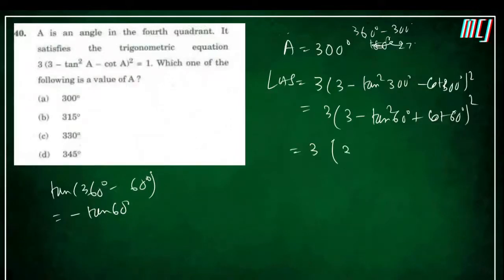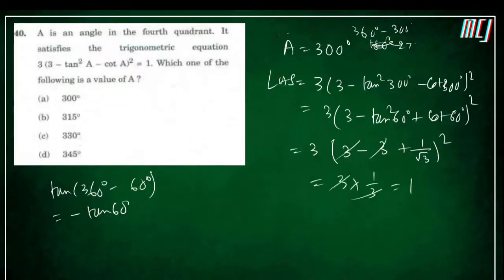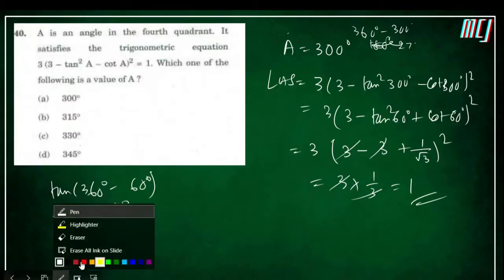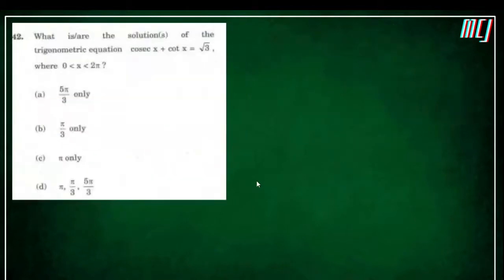Evaluating: 3·(3 − tan²300°) = 3·(3−3) = 0, then + (1/√3)² = 1/3. Taking the square root gives 1/√3, which matches. So A = 300° is the correct answer. Checking options confirms this — no need to check all options since only one will be correct.